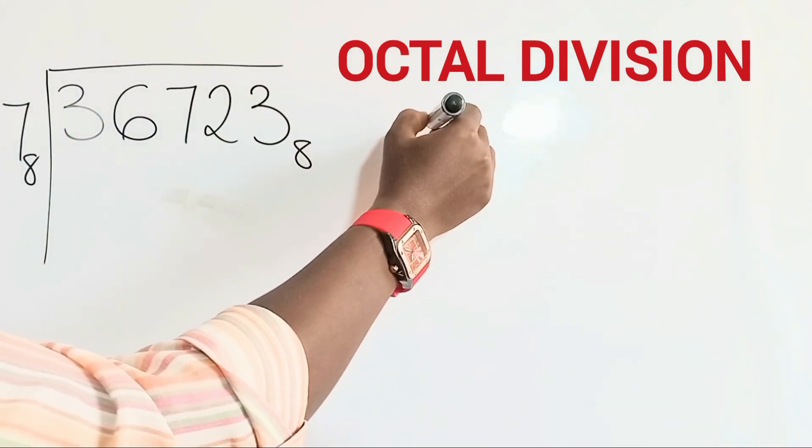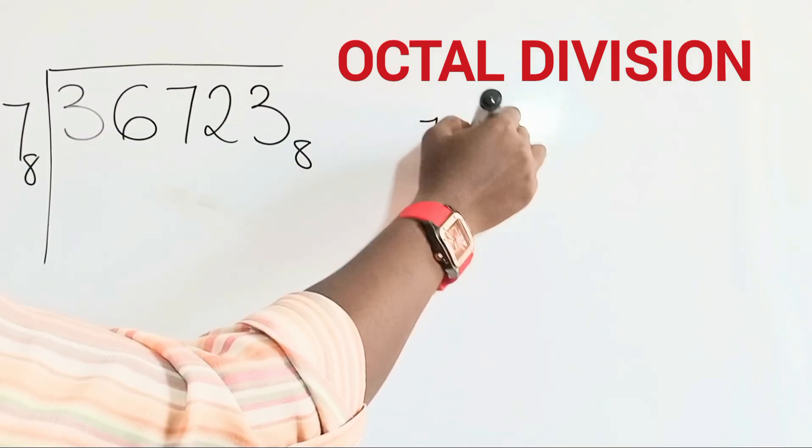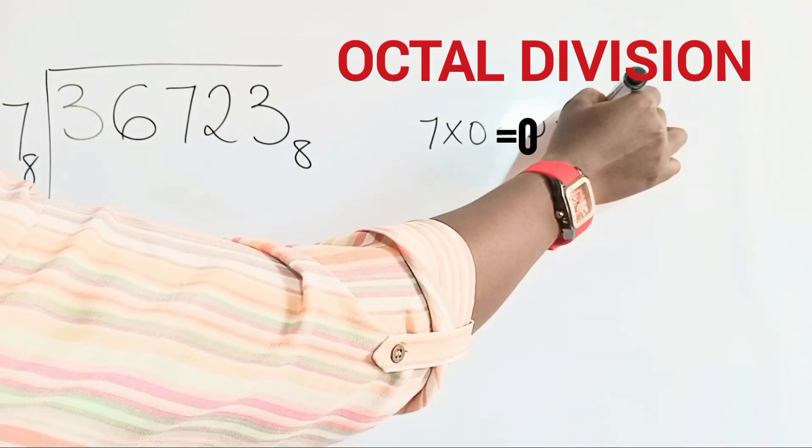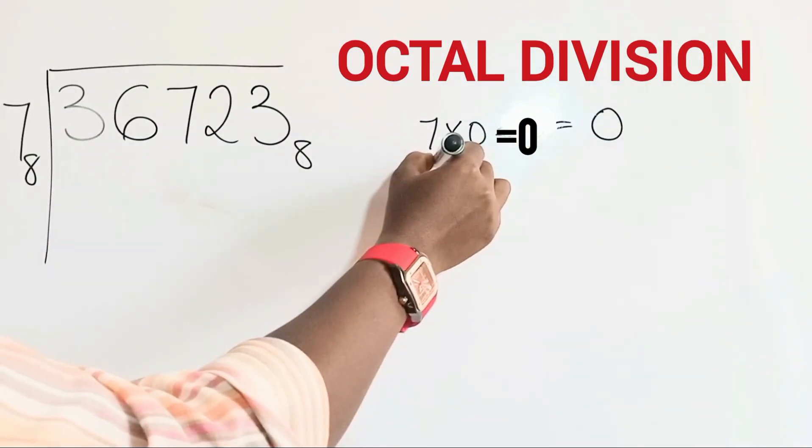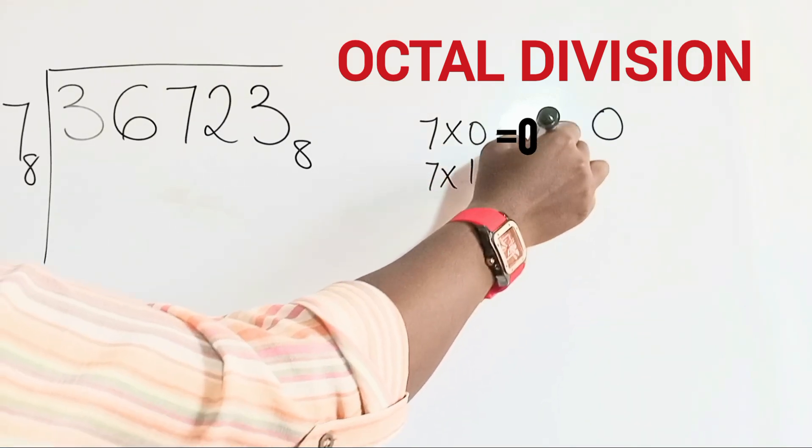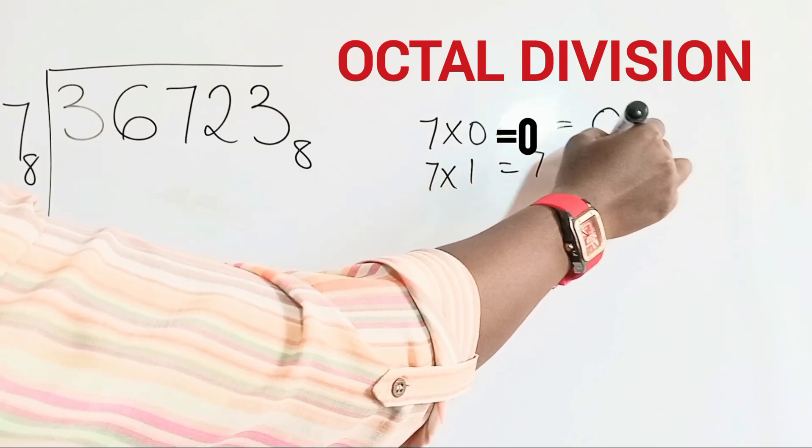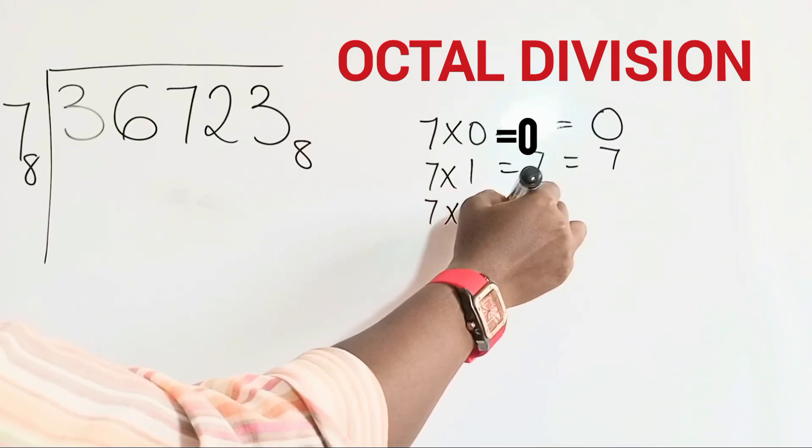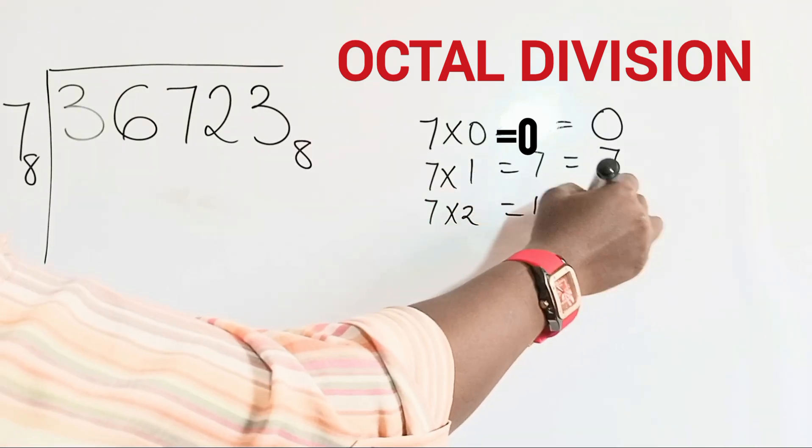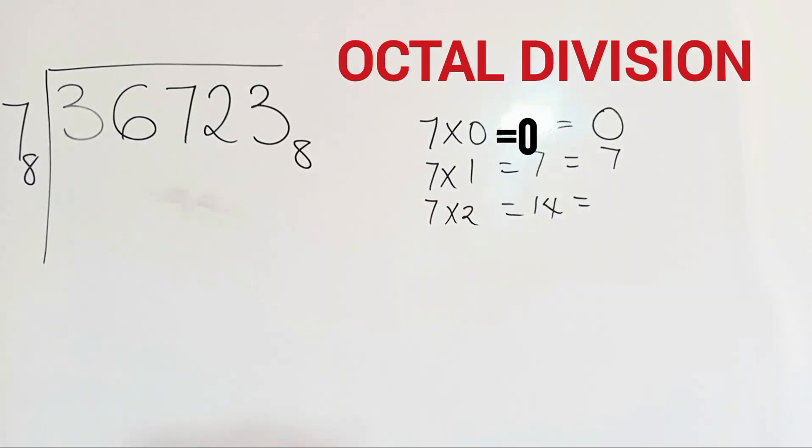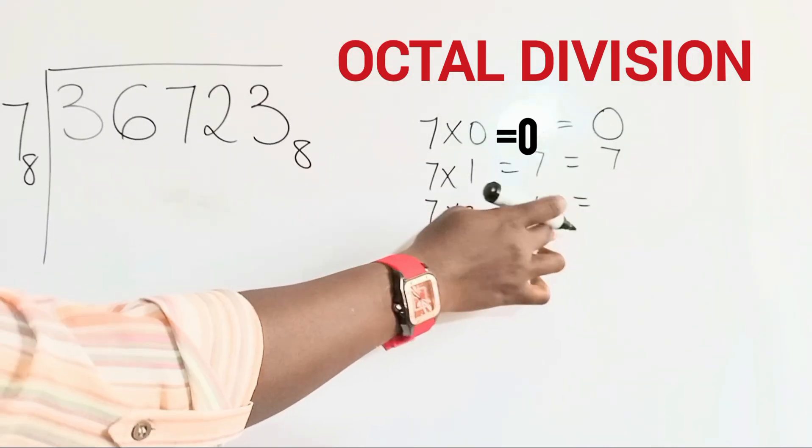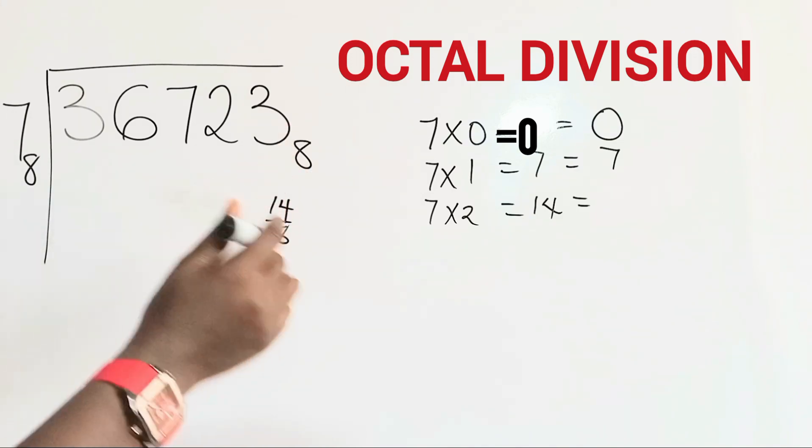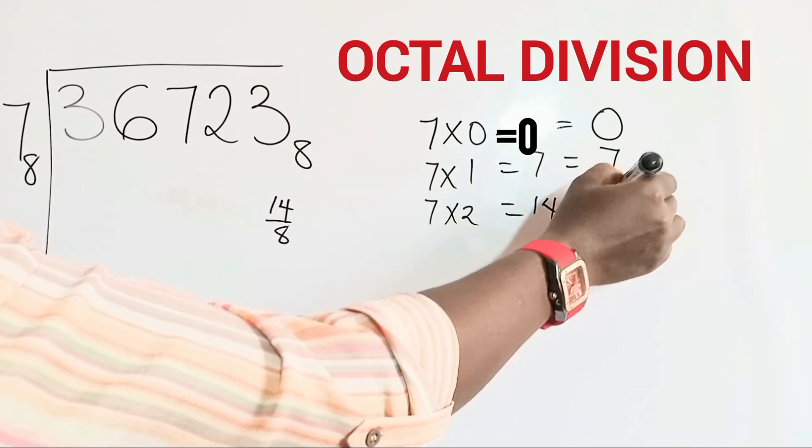We start with 0. 7 times 0 equals 0 in base 10, in base 8 it's also equal to 0. 7 times 1 equals 7 in base 10, we have 7 in base 8. 7 times 2 equals 14. For us to have the corresponding value in base 8, we divide 14 by 8. 8 will go into 14 once, remaining 6.